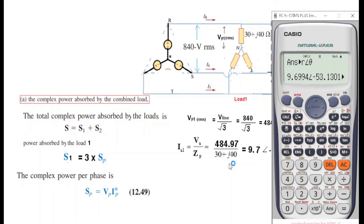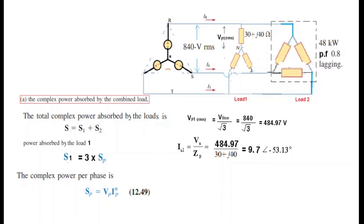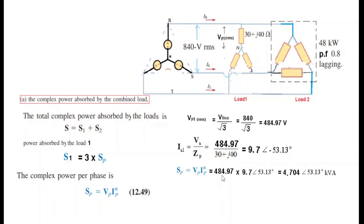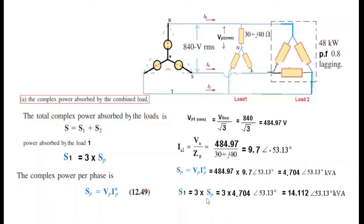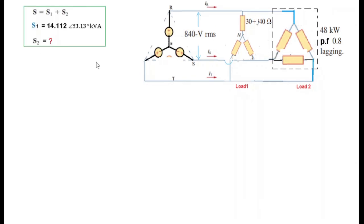The answer is 9.699, approximately 9.7, at angle minus 53.1 degrees. The current Ip conjugate has the angle sign changed to plus 53.1 degrees. Multiplying Vp by Ip conjugate gives single-phase power, and multiplying by three gives S1 = 141.2 angle 53 kVA.